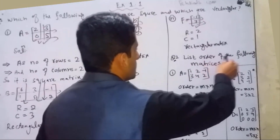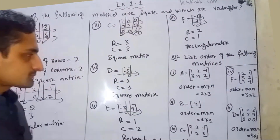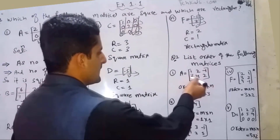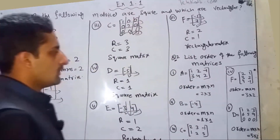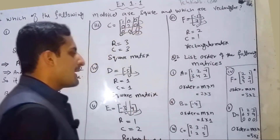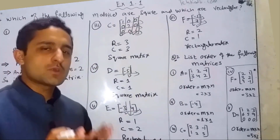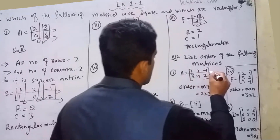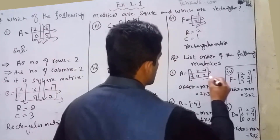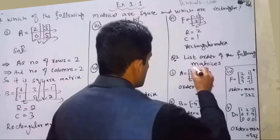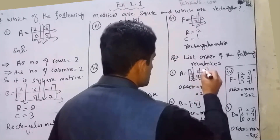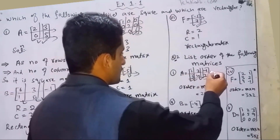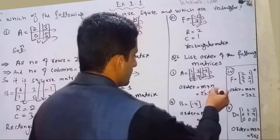Question 2, Part a: A = [[1,2,-1],[3,4,2]]. Order equals m cross n, where m represents number of rows and n represents number of columns. Number of rows = 2, number of columns = 3. So order is 2×3.